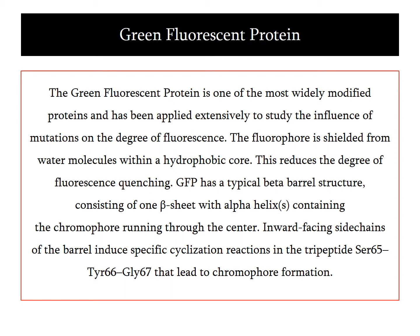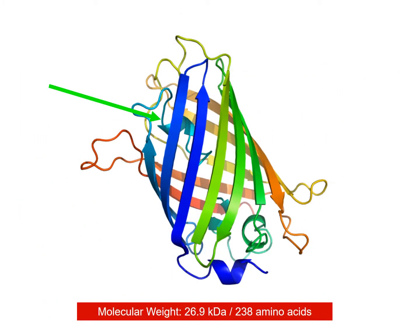One of the most widely studied proteins is the green fluorescent protein. It has applications to biotechnology. It consists of a beta barrel which envelopes a fluorophore. This unique structure ensures that the fluorophore is not exposed to water molecules, and this will ensure that the fluorophore will be functional in aqueous solutions.